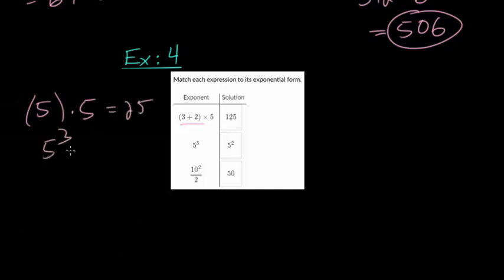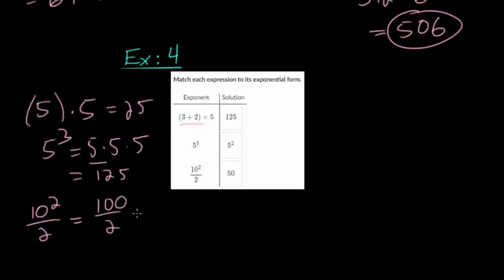5 cubed we know is 5 times 5 times 5. This is 25 times 5 again gives you 125. And then 10 squared over 2, you do the exponents first. 10 times 10 is 100. 100 divided by 2 is 50. So this is correct. And these two need to flip. So this would be 125. And this would be 5 squared.